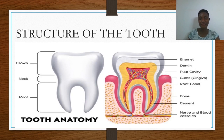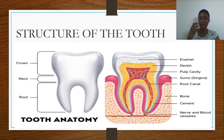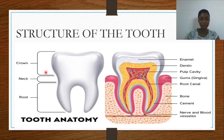The pulp cavity runs from the crown through the neck to the roots. Within the pulp cavity is where you have the blood vessels and nerves running to the teeth. So typically when you eat hot or cold food and sense some discomfort, it will be coming from the pulp cavity of your tooth — that's where your blood vessels and nerves are.